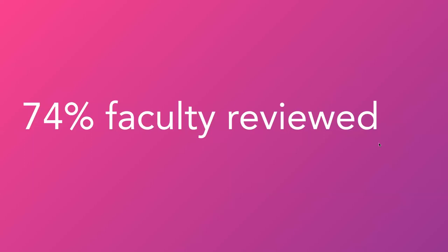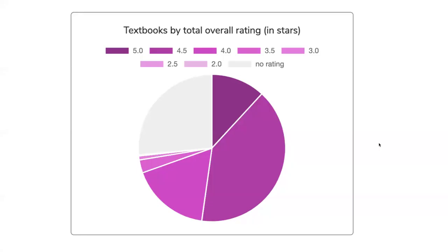About 74% of the collection includes faculty reviews. Most of the books in the OTL are favorably reviewed — this is the breakdown from no stars to five stars. The majority have a four and a half star rating, with five and four stars close behind as the most common ratings.